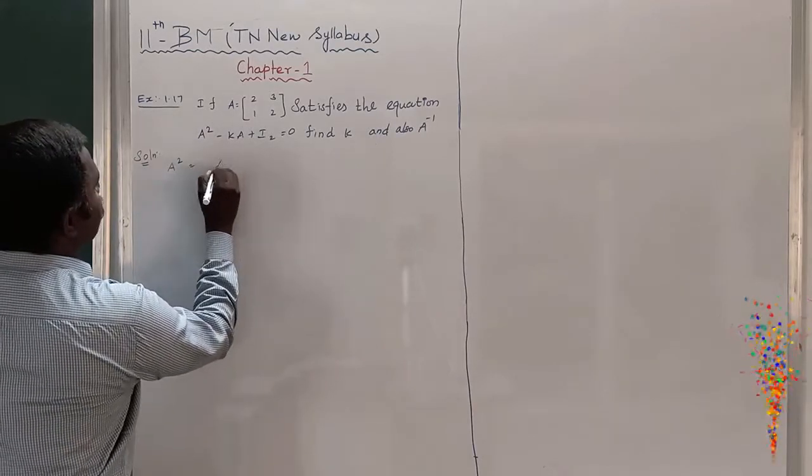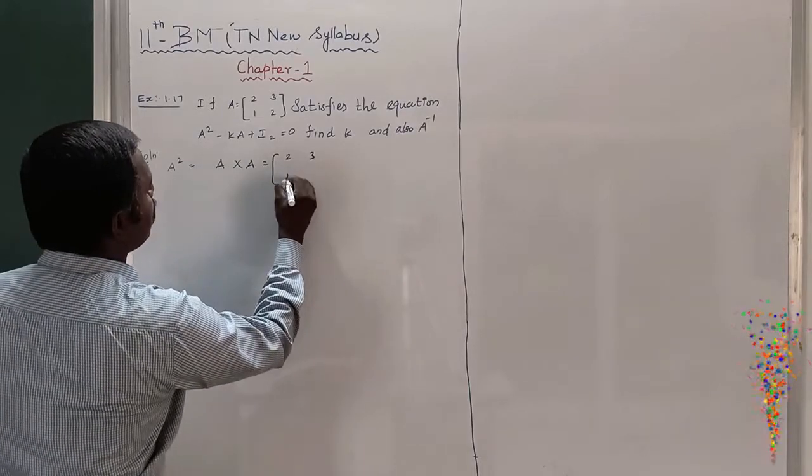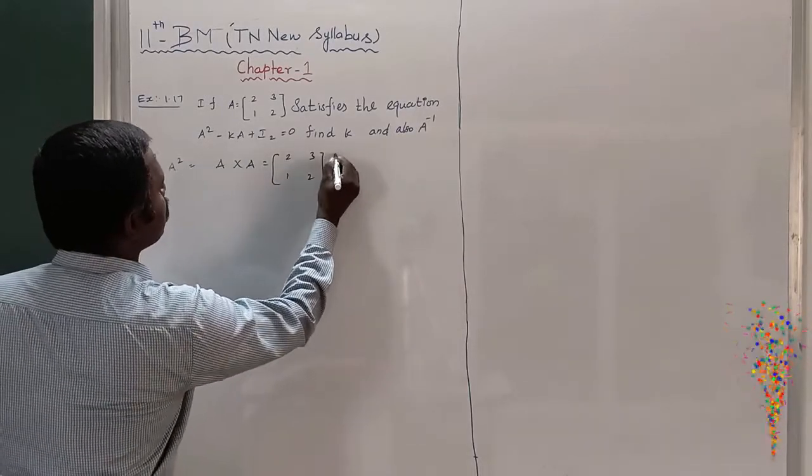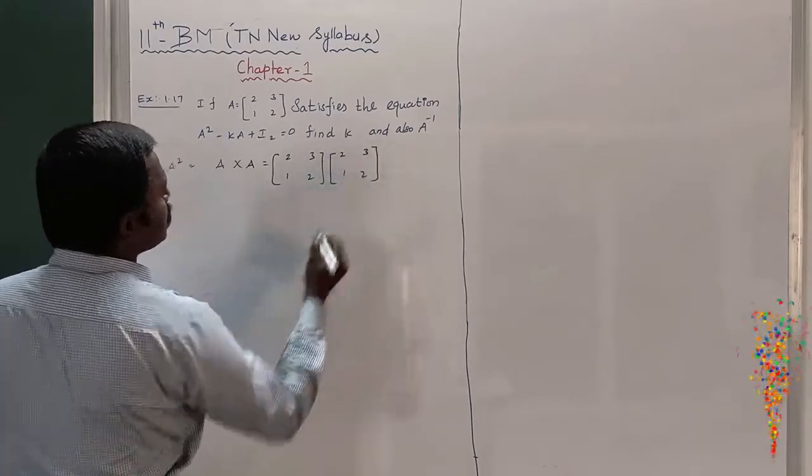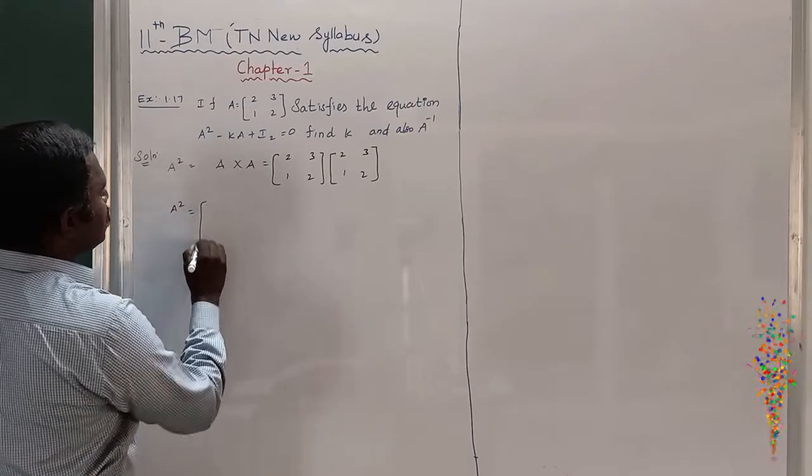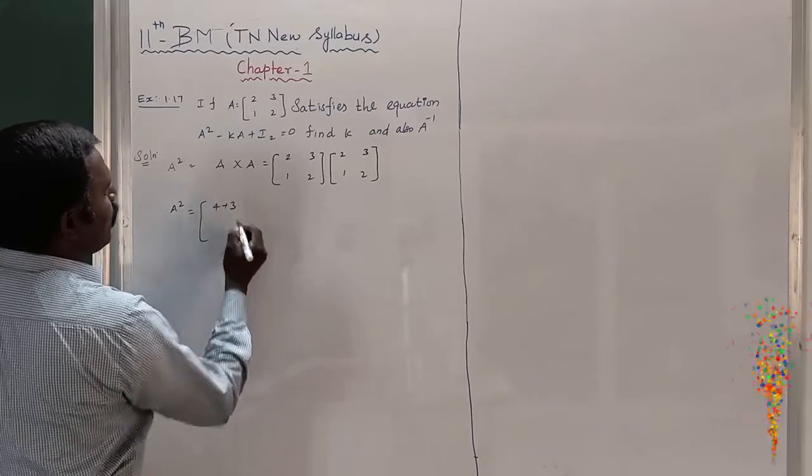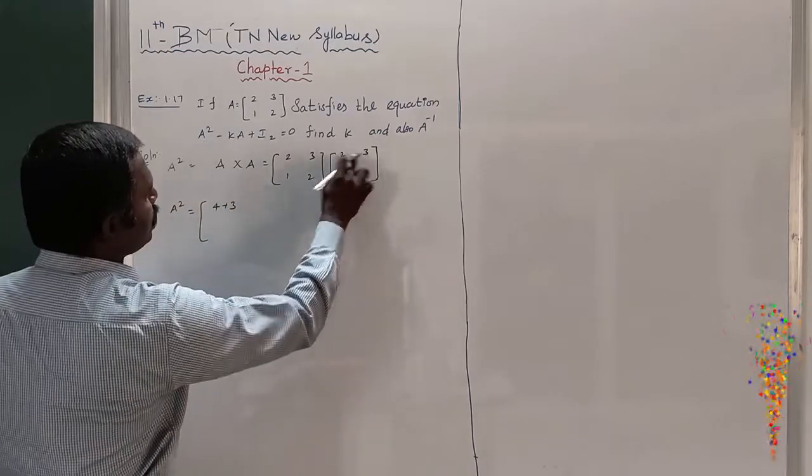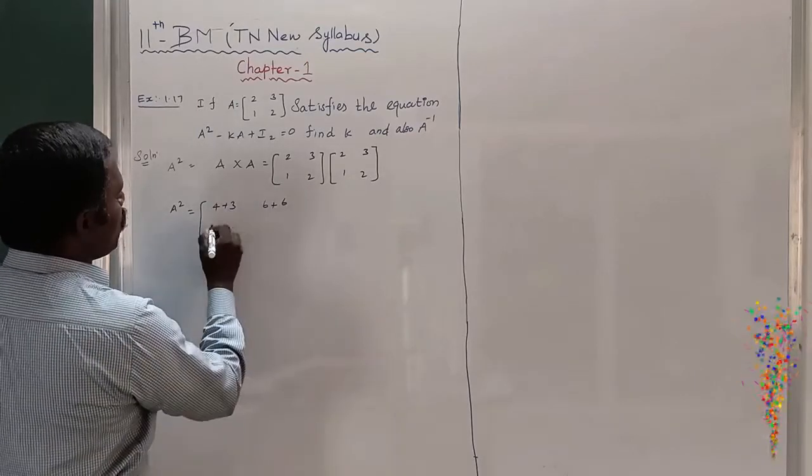A² means A into A. So [[2,3],[1,2]] into [[2,3],[1,2]]. We already know the matrix multiplication from 10th class. 2 times 2 is 4, plus 3 times 1 is 3. And 2 times 3 is 6. 2 times 3 is 6. 6 plus 6.